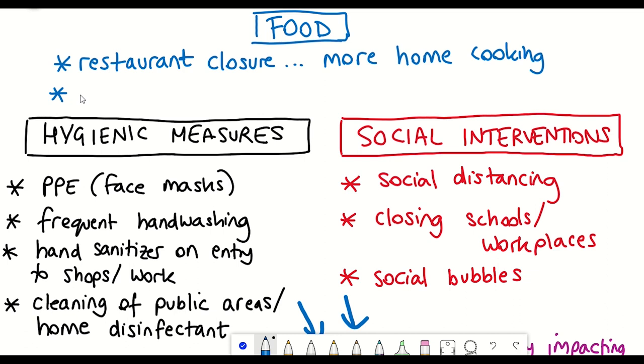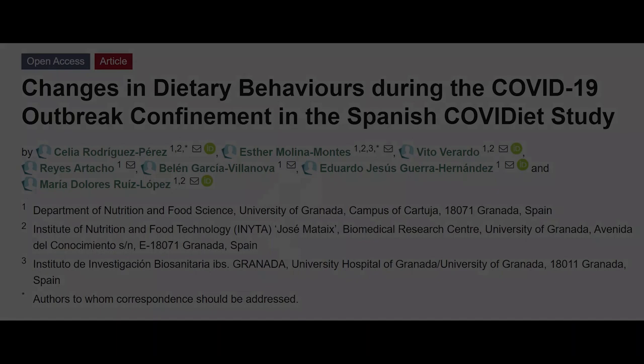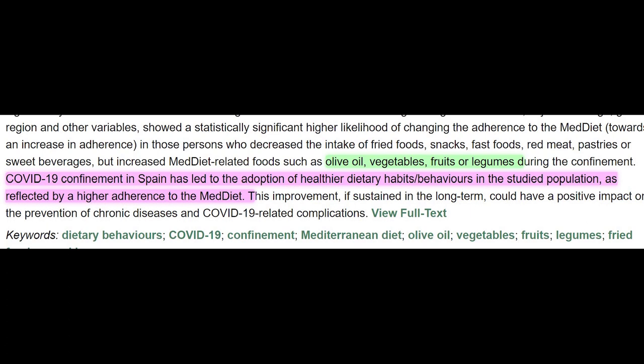For example, the closure of restaurants has resulted in an increase in home cooking, along with the conscientiousness of making better food choices in terms of trying to boost your immune system. For example, a small study was conducted in Spain, the so-called Spanish COVID diet study. And what they found was that COVID-19 confinement in Spain has led to the adoption of healthier dietary habits and behaviors in the studied population, as reflected by a higher adherence to the Mediterranean diet.